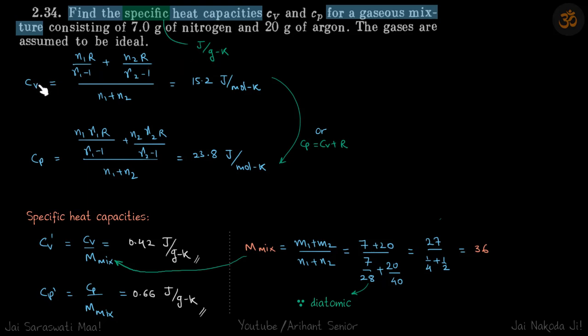So Cv we have already seen this in previous problem. Cv we can write like this: N1·C1 plus N2·C2 upon N1 plus N2, and Cp will be N1 into Cp1 plus N2 into Cp2 upon N1 plus N2. So just put the values and this will be Cv and Cp but this is for per mole Kelvin.